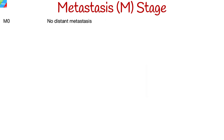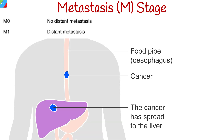M0 indicates that there is no distant metastasis. M1 shows that the cancer has spread to distant organs or tissues such as the liver, lungs, bones, or distant lymph nodes.